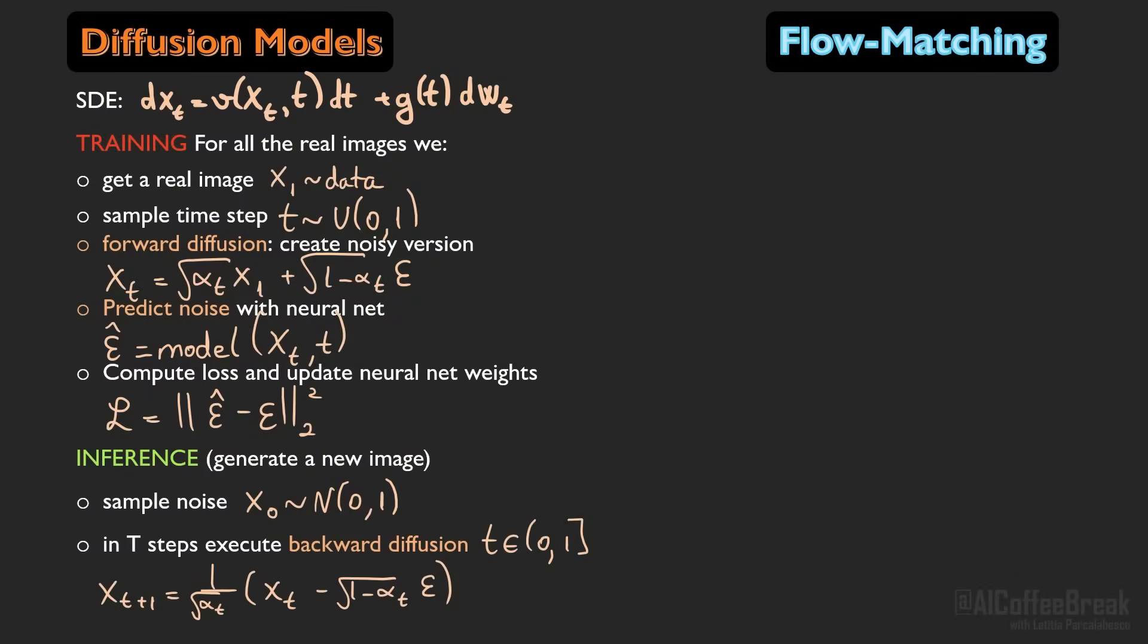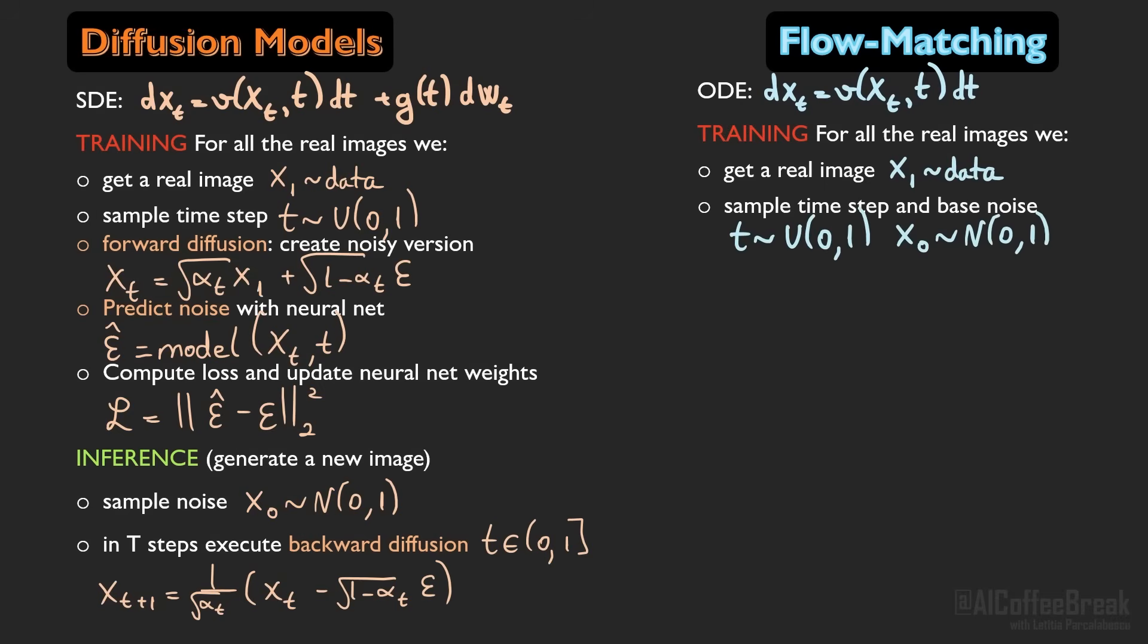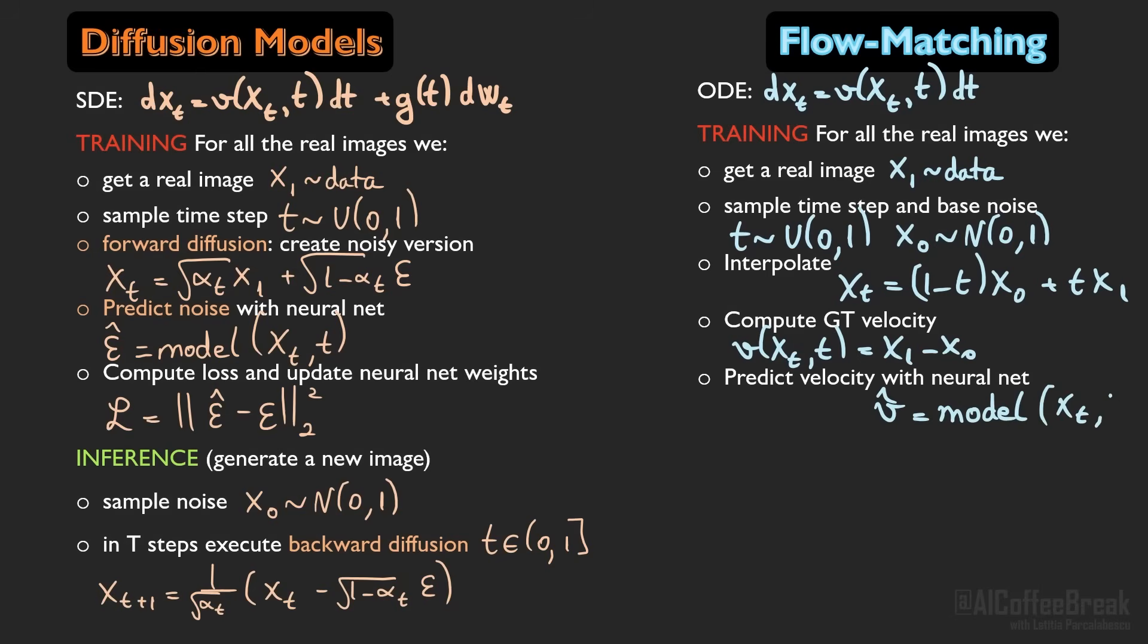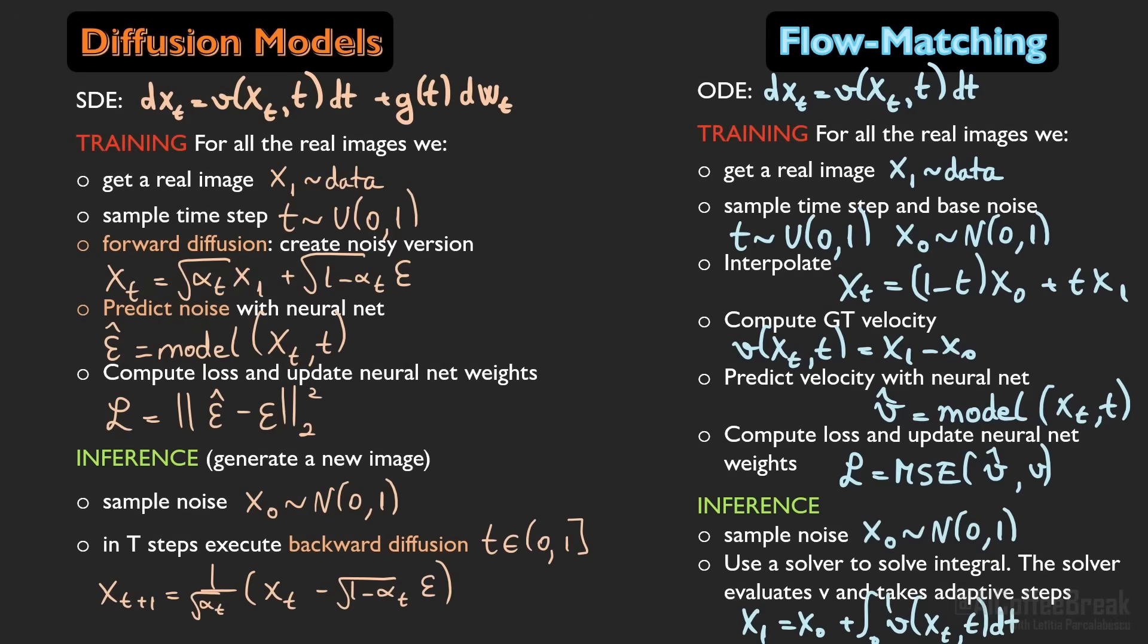Flow matching models skip the randomness of diffusion and replace it with a smooth deterministic flow, simplifying the SDE to just a simple ODE. For training flow matching models, we sample a data point from our data set, then a time step t and a random noise sample x0, then we interpolate between the real image and the noise, and compute the ground truth velocity. The neural network learns to predict this velocity, so in contrast to diffusion models where the neural net has learned to predict the noise we had added, we now predict velocities. We use a mean squared error loss to enforce the neural network to predict the right velocity, and at inference we start from noise and integrate the learned velocity field using a solver which takes adaptive steps to trace the flow all the way to the final image.